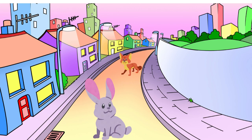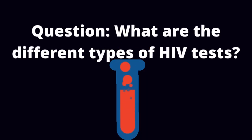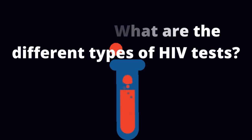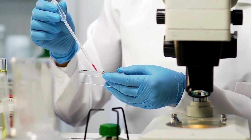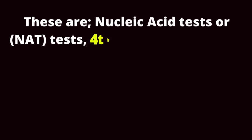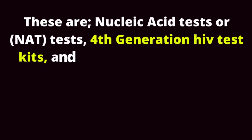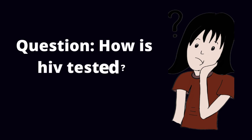Question: What are the different types of HIV tests? There are basically three types of HIV tests. These are nucleic acid tests (NAT tests), fourth generation HIV test kits, and rapid antibody-only HIV test kits.